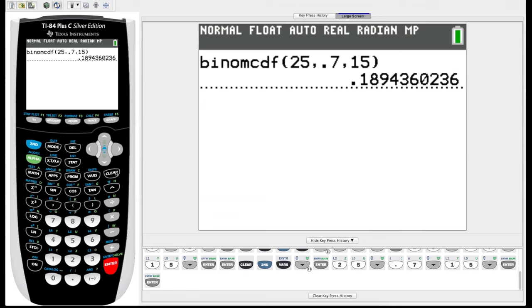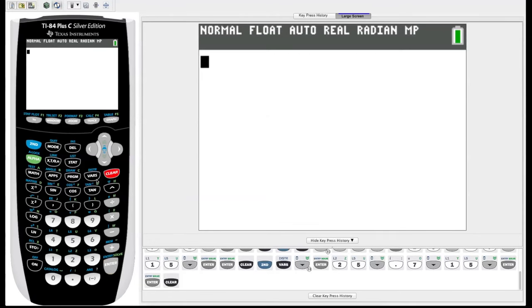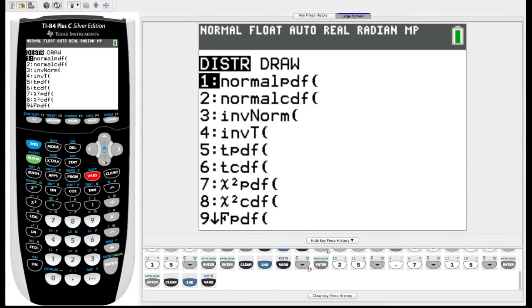These are all the probability functions I'm going to run you through, but you'll notice if we go back to our distribution menu there are multiple other types of cdfs and pdfs. If you're familiar with chi squared, f, t tests, or students t distribution, all work fairly similarly to normal and binomial.